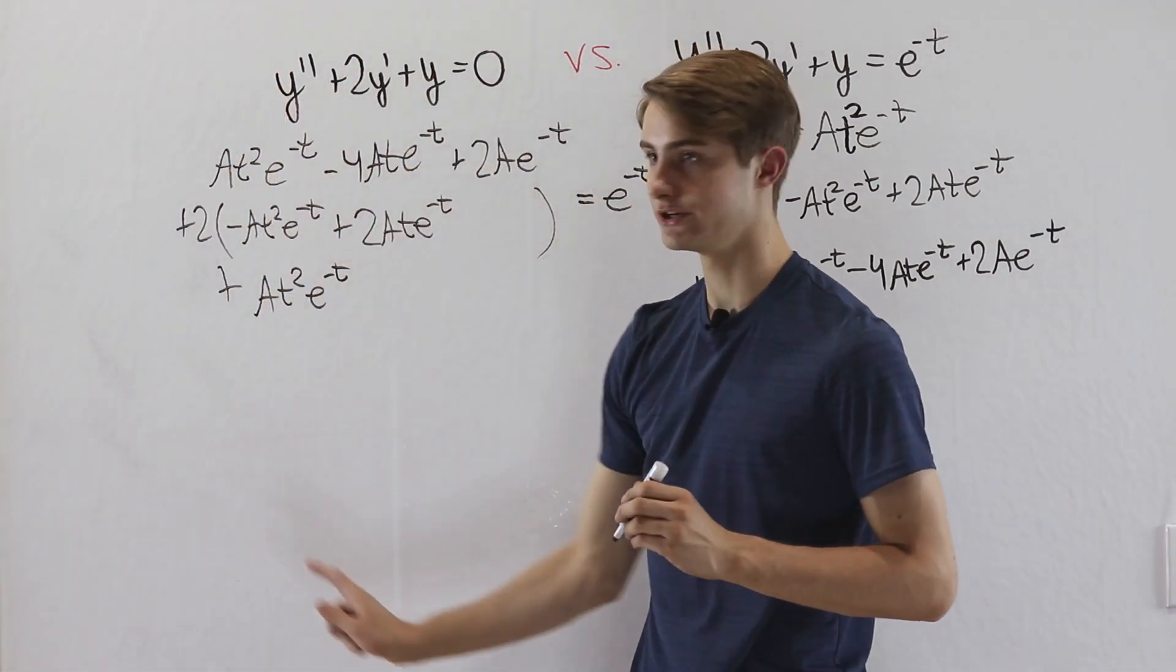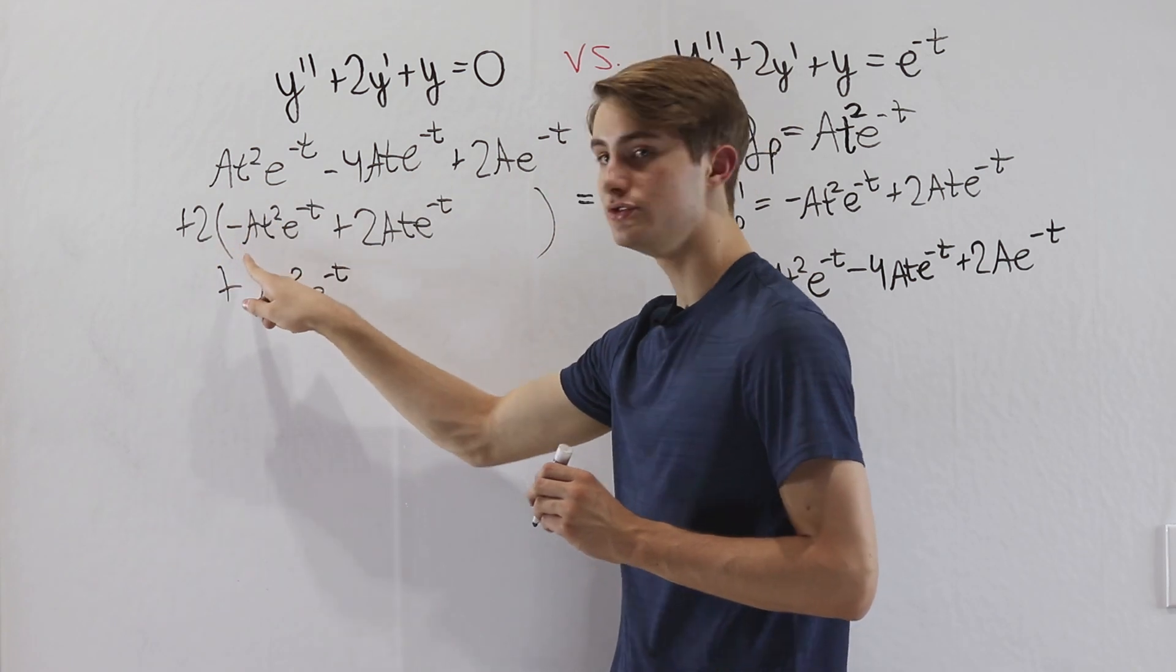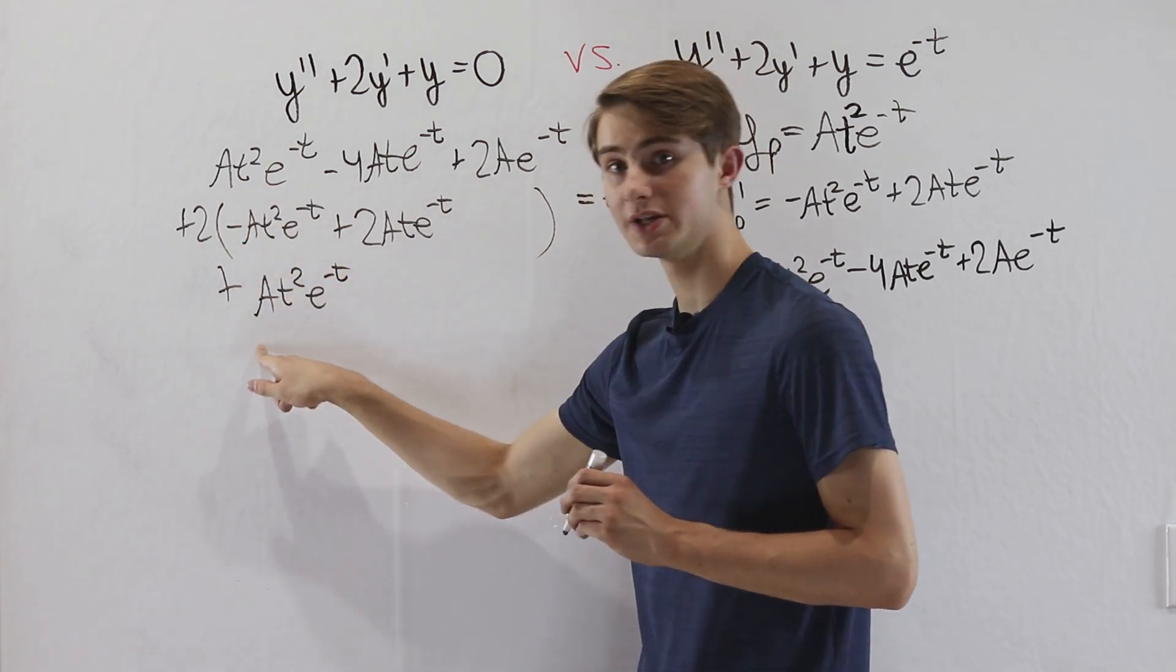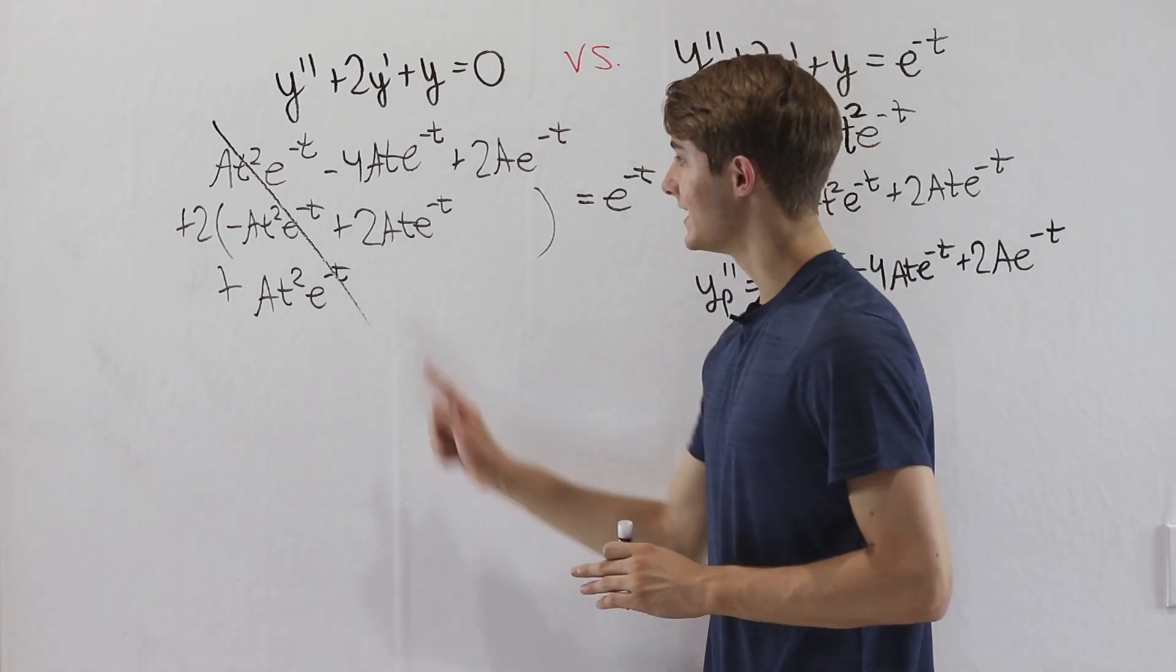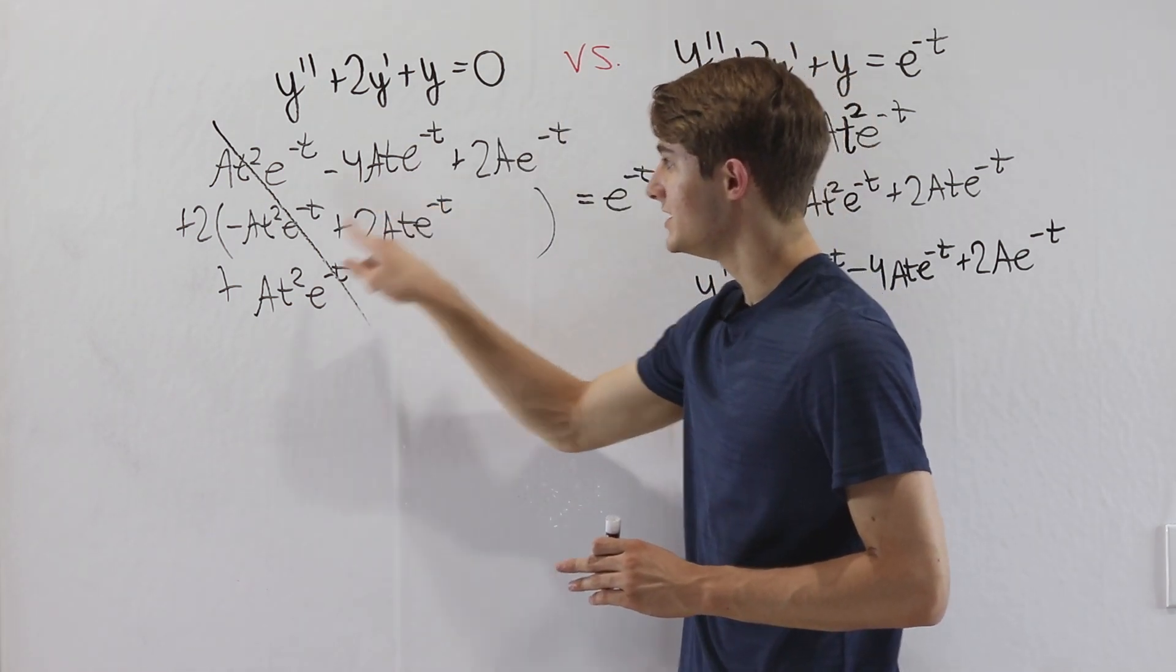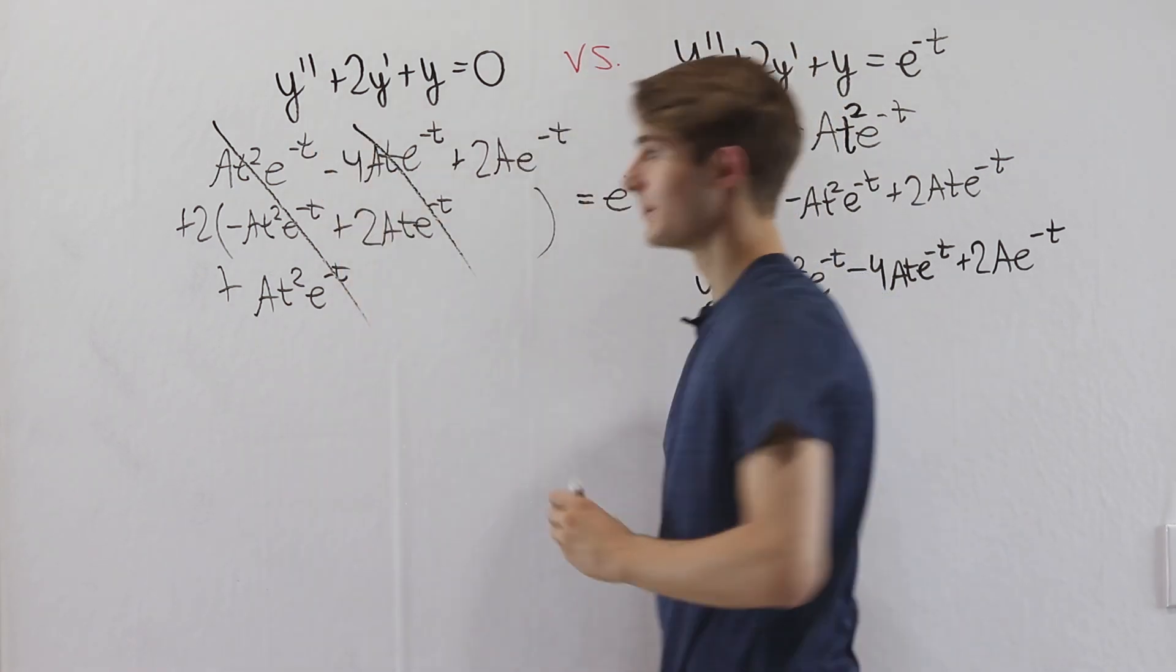First of all, if we look at the t squared terms, we have a plus t squared, then minus 2 a t squared, and then plus a t squared again. This entire row is going to cancel out. Next, we have a minus 4 a t plus 2 times 2 a t. That's another 4 a t. Those cancel out.